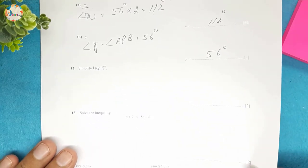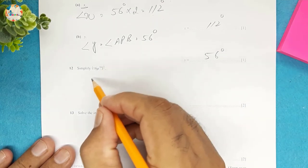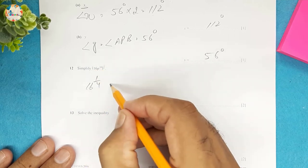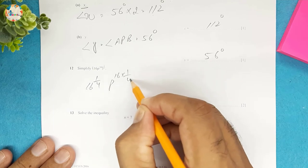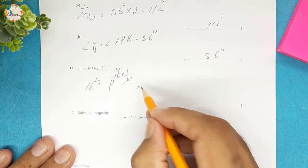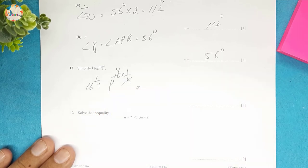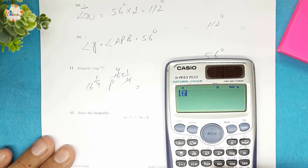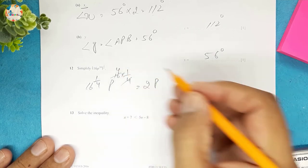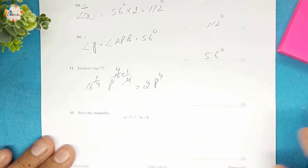Question 12. Simplify using indices: 16^(1/4) × p^(16 × 1/4). Since 16^(1/4) = 2, and 16 × (1/4) = 4, the answer is 2p⁴.